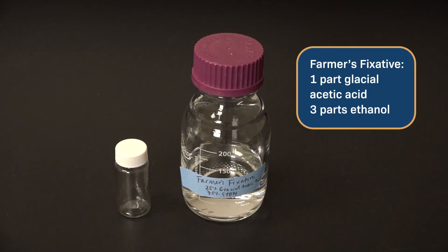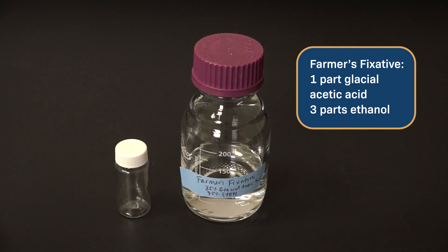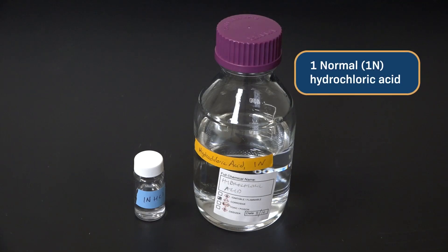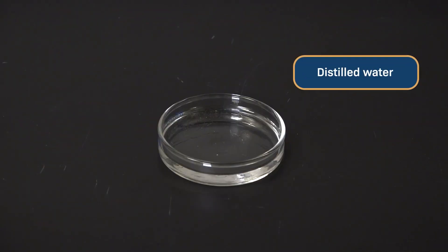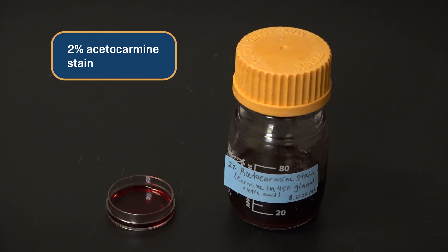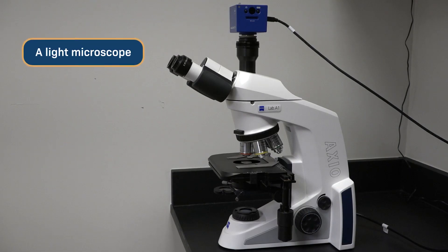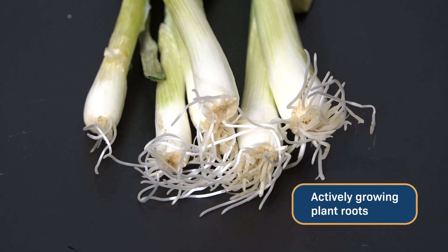Okay, let's start the experiment. You'll need a vial of Farmer's fixative - that's one part glacial acetic acid, three parts ethanol - scissors, forceps and scalpels, a vial of one normal hydrochloric acid, a dish of distilled water, a dish of two percent acetocarmine stain, microscope slides and cover slips, a light microscope, and actively growing plant roots.